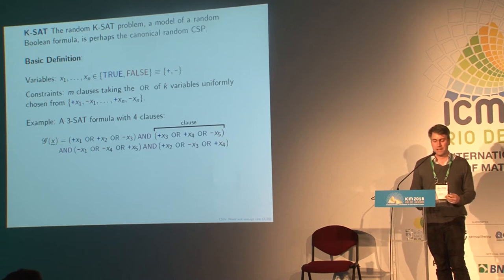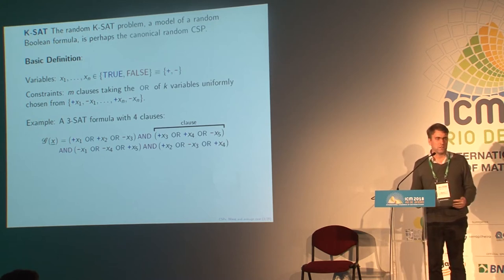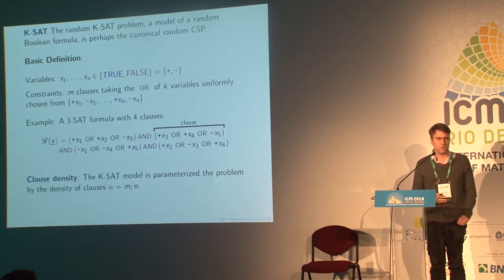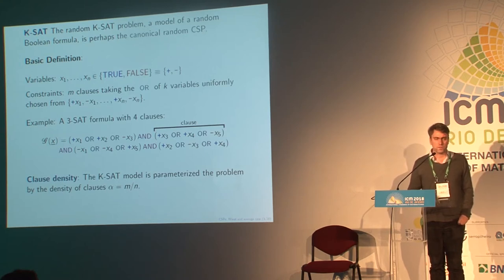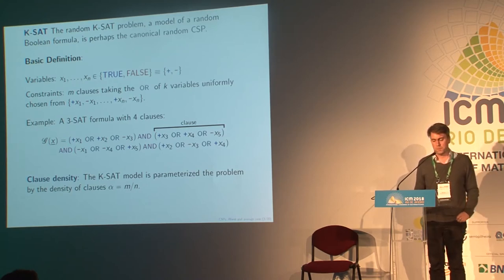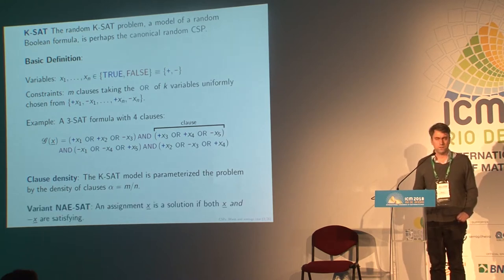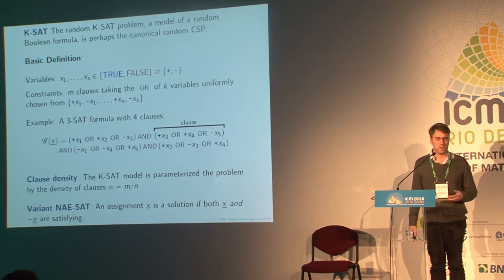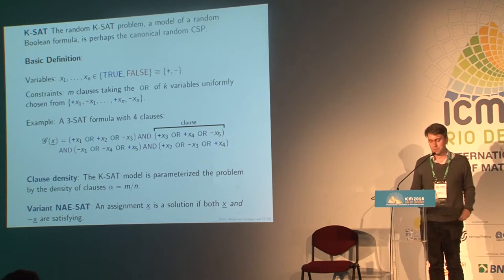For 3SAT, we want all clauses to be satisfied, so we take the AND of them. Obviously, the more constraints you have, the harder it will be to satisfy all of them simultaneously. We can parameterize by the clause or constraint density — the ratio of the number of constraints divided by the number of variables — which is the right scaling to take, and I'll call this alpha from now on. I'll also mention a variant, the NAE-SAT model, which asks that X satisfies the formula and also the negation of X satisfies it. This extra symmetry makes it a bit more tractable in some cases.